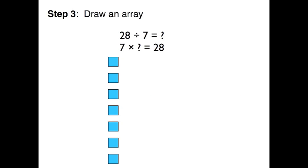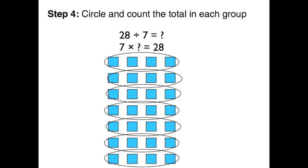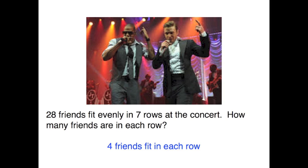Moving on to step 3: did you create an array to help you solve the problem? Remember, the 7 tells us that we have 7 rows. Let's count: 7, 14, 21, and 28. Now it's time to circle the groups in each row. It looks like we have 4 in each row, so we know the missing factor is 4. 28 divided by 7 equals 4, and 7 times 4 equals 28, which means 4 friends fit in each row.